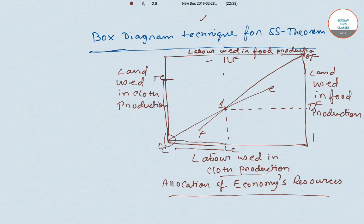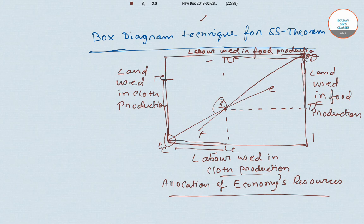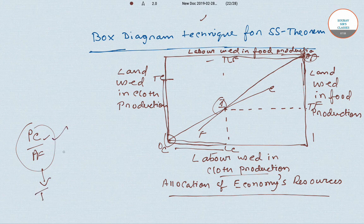Similarly, OF is the origin of the food industry. OF-LF is the labor used in food production, and OF-TF is the land used in food production. Now, given the relative price of cloth PC/PF, we can determine the ratio of land to labor in cloth production, TC/LC, which is the land-to-labor ratio in cloth production.